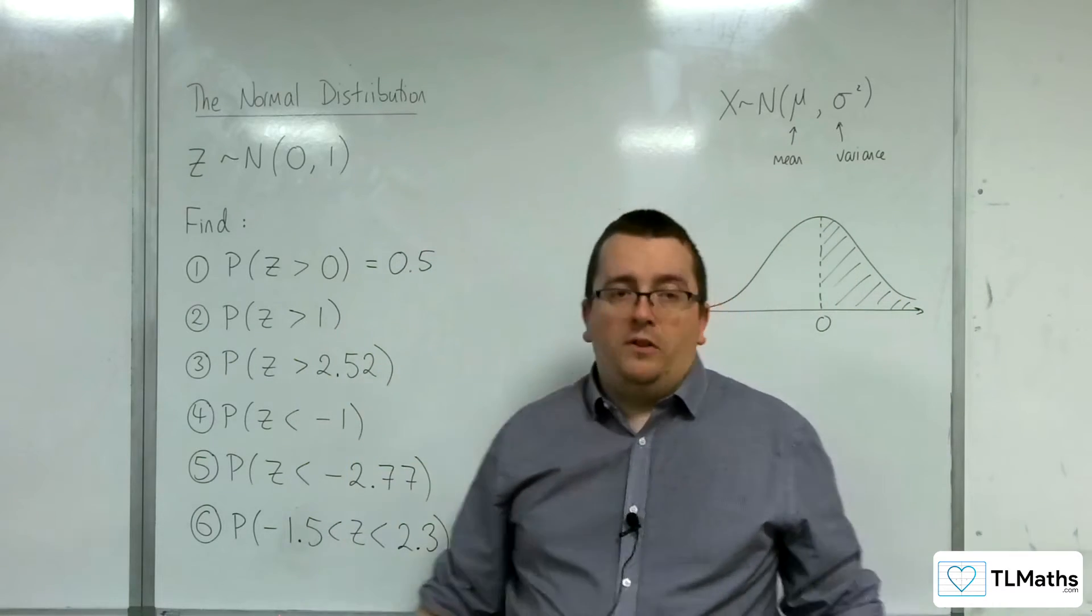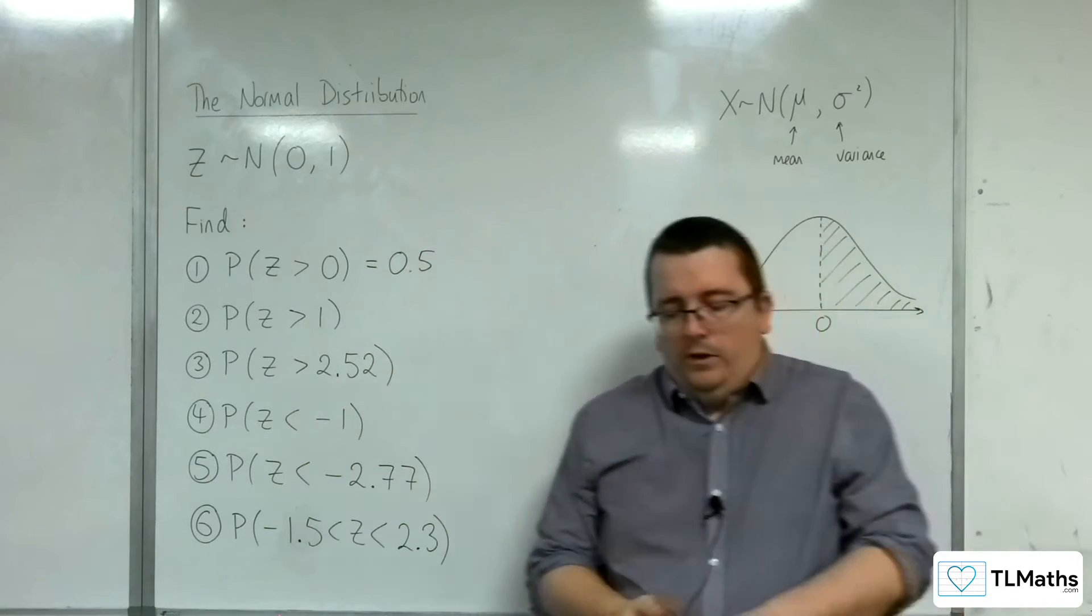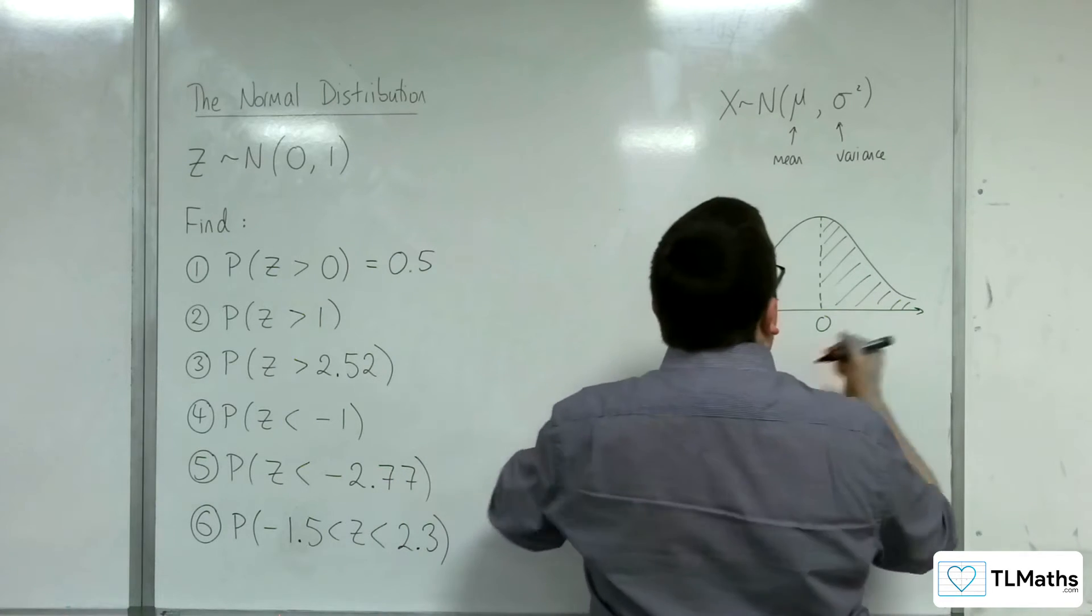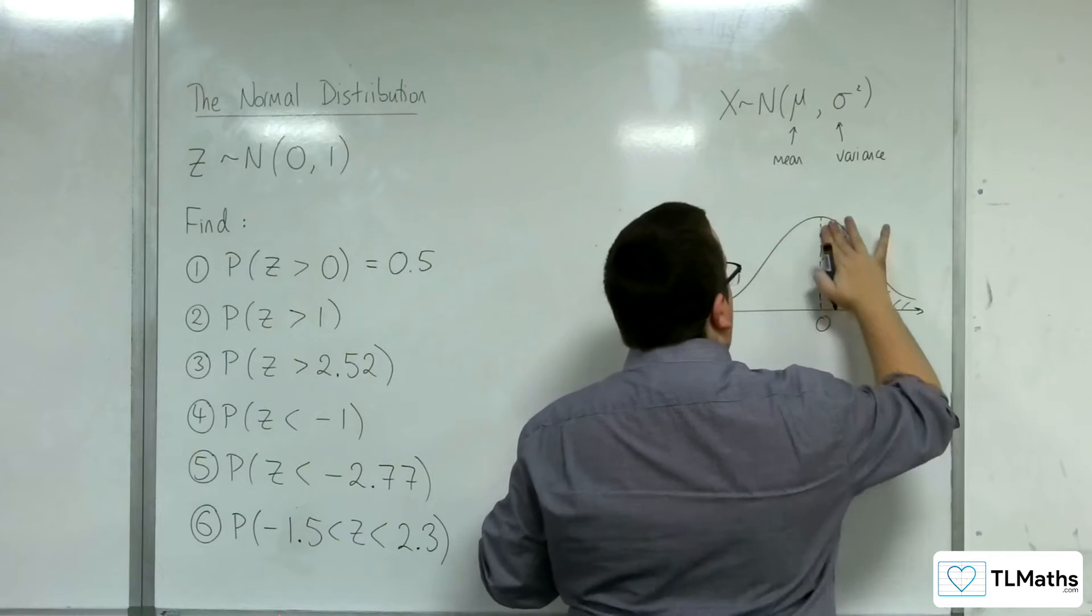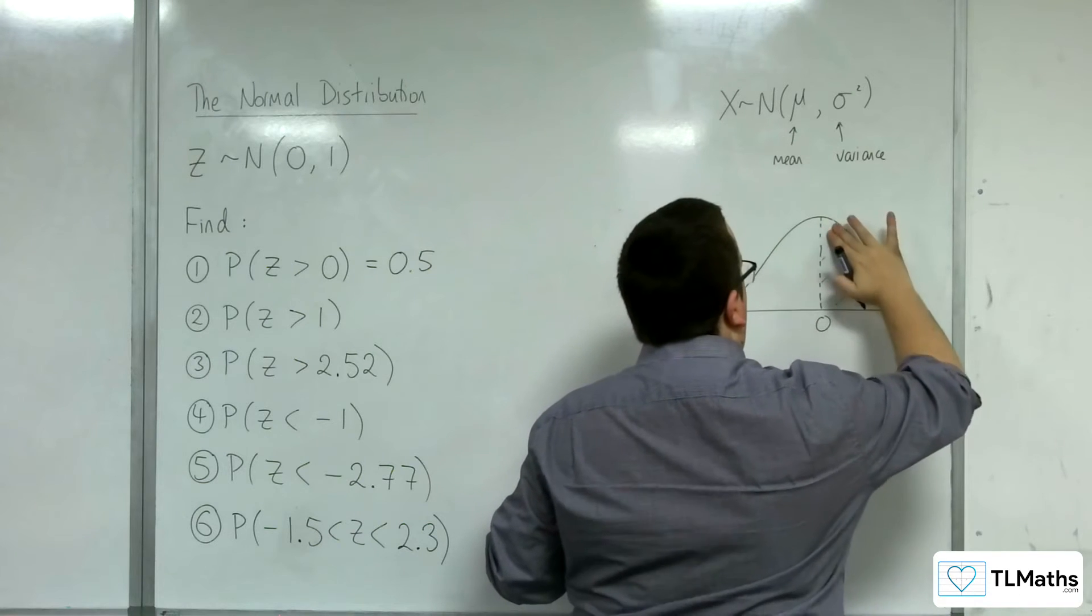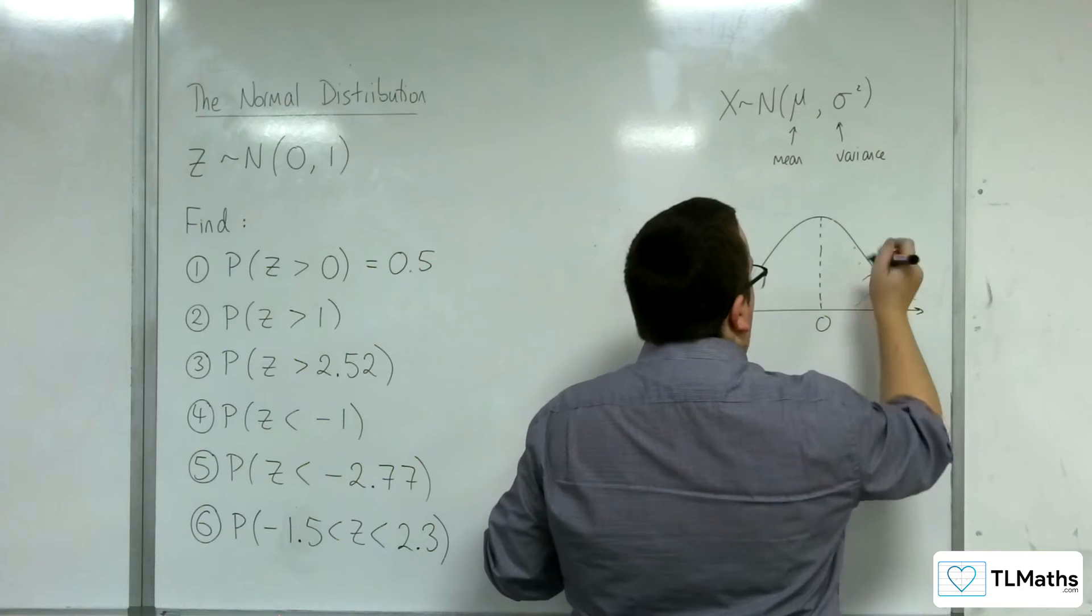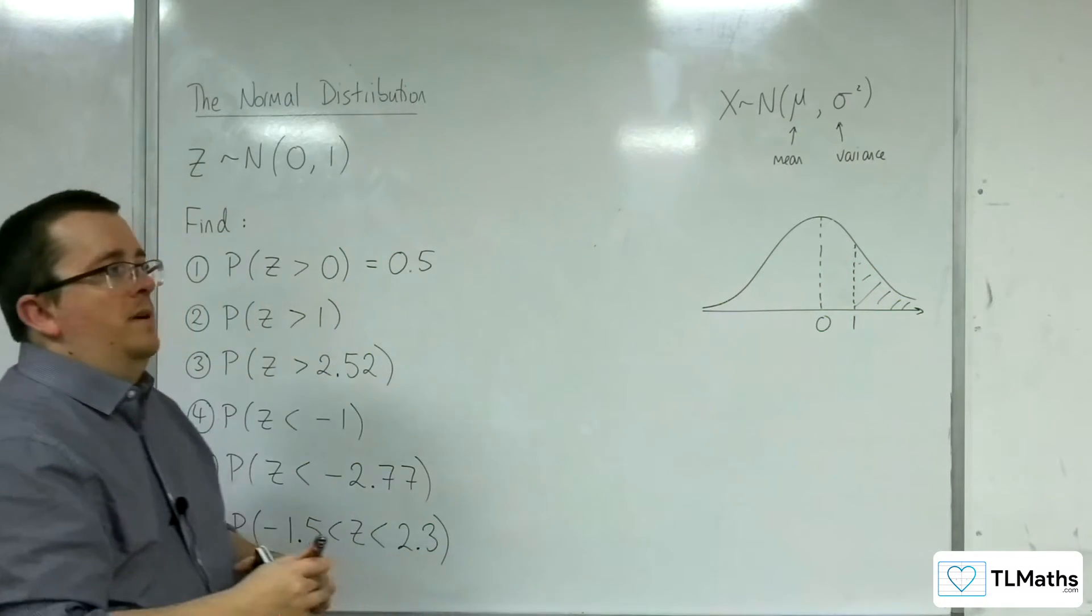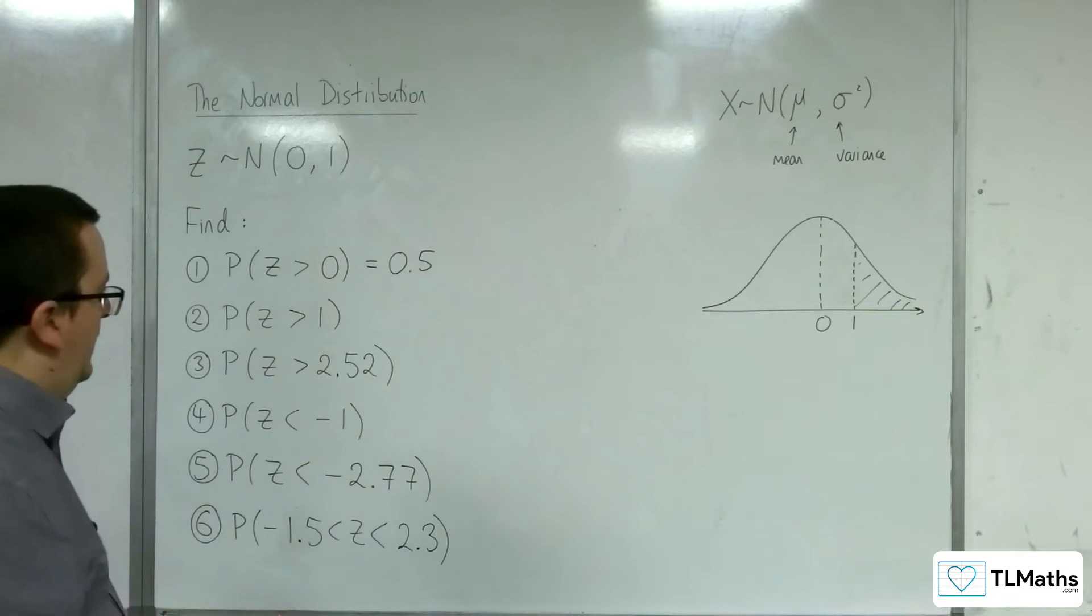So probability of Z being greater than 1. I want to go to my calculator. Let's draw this into the diagram so we can visualize what we should be finding. Because it's over this way, we'd be expecting a number less than 0.5, right? Less than a half.